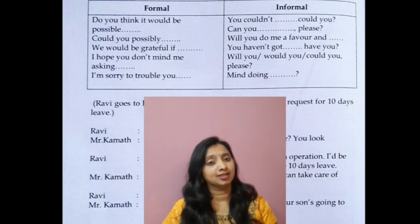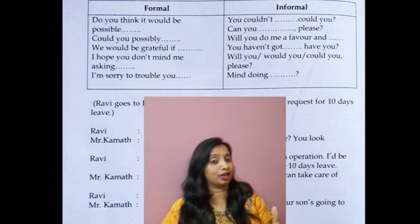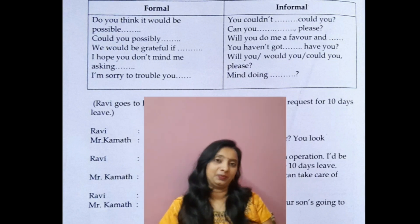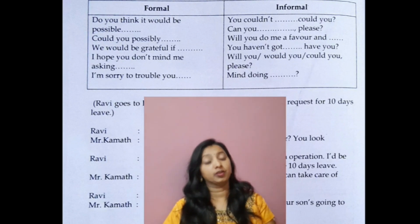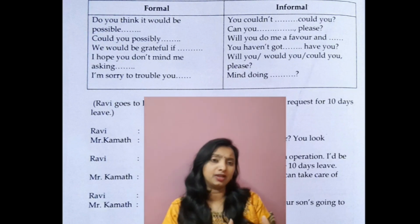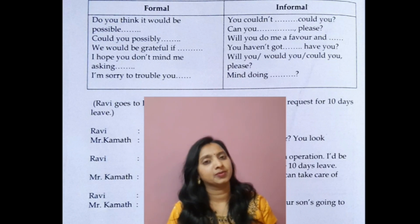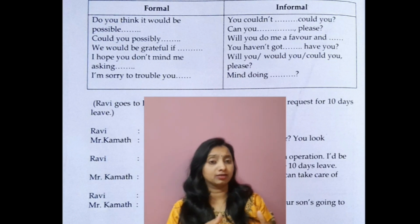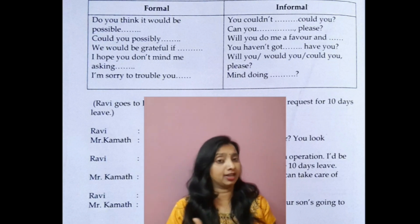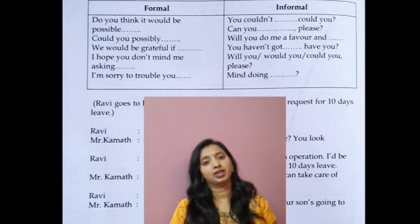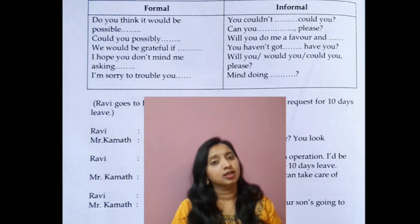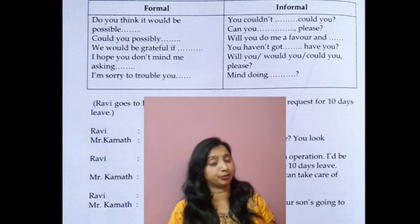Next: 'Could you possibly?' — for example, 'Could you possibly think of any other idea?' Then: 'We would be grateful if you can help me complete this project,' or 'We would be grateful if you can give me a great idea,' or 'We would be grateful if you can come with me to discuss this.'